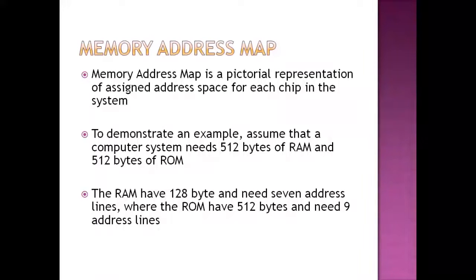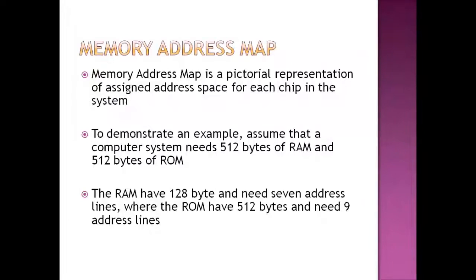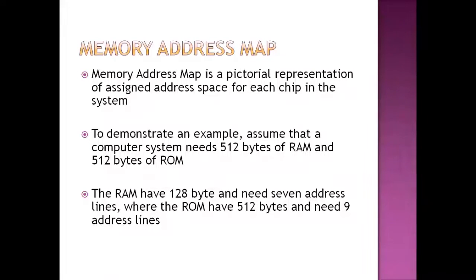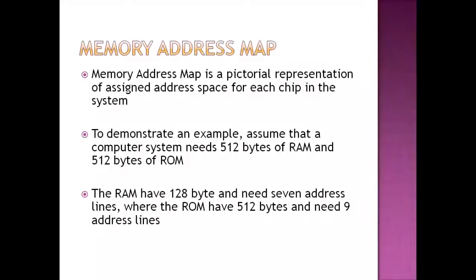For example, we assume our computer system needs 512 bytes of RAM and 512 bytes of ROM. The RAM capacity is 128 bytes per chip, which means to have a total of 512 bytes of RAM we need four RAM chips. The ROM chip is of 512 byte capacity, so we need only one ROM chip for this system.